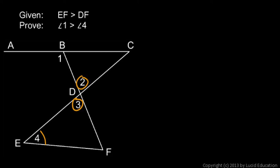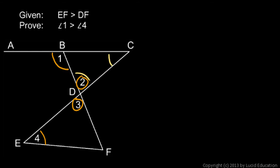I'm trying to prove that angle 1 is bigger than angle 4. Angle 1 is an exterior angle for this triangle, and exterior angles are always bigger than either remote interior angle. So angle 1 has to be bigger than angle 2. And if angle 1 is bigger than angle 2, and angle 2 is bigger than angle 4, then angle 1 must be bigger than angle 4. That's my reasoning, and I'll spell this out in a series of steps.